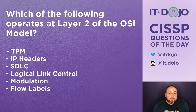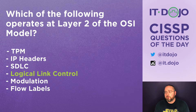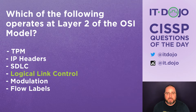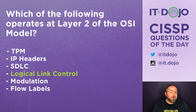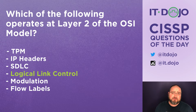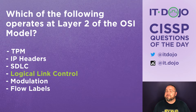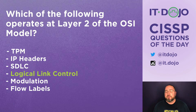Logical link control — ding ding ding — that's all about layer two of the OSI model, looking at how ethernet is structured in terms of the media access control and logical link control components of ethernet. Modulation is all about layer one. And flow labels are actually built into the IPv6 header, so that would also be layer three.